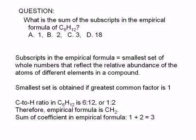Empirical formula refers to a formula where the subscripts are the smallest possible whole numbers that reflect the relative abundance of the atoms of different elements in a compound. We get the smallest of whole numbers if the greatest common factor of the numbers is 1.